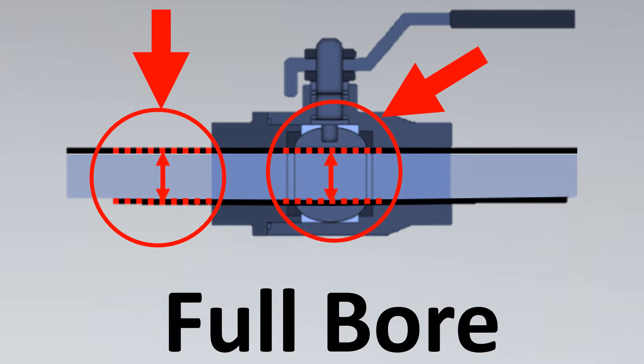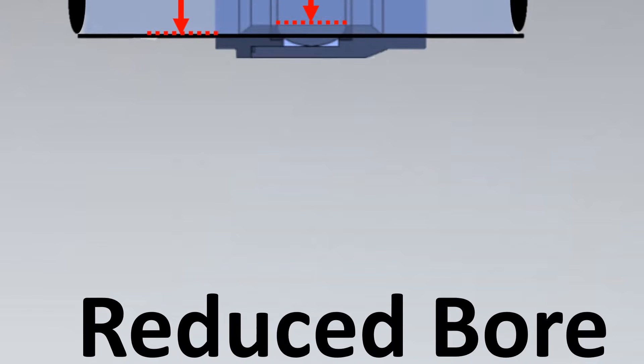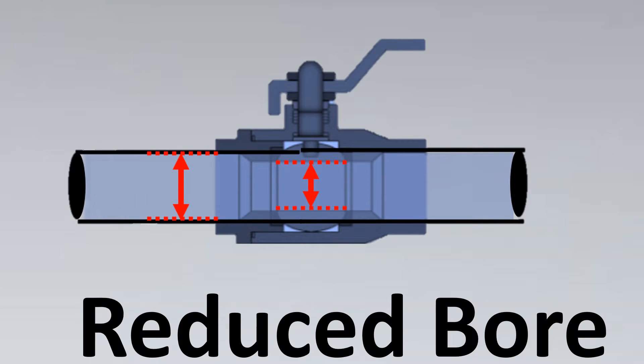Now you might be able to guess what a reduced bore valve is. A reduced bore valve is similar to it, except that if you see this distance which is inside the valve where the fluid would be passing, it would be different compared to the size of the line. So since it is reduced than the line size, the term comes as reduced bore valve.